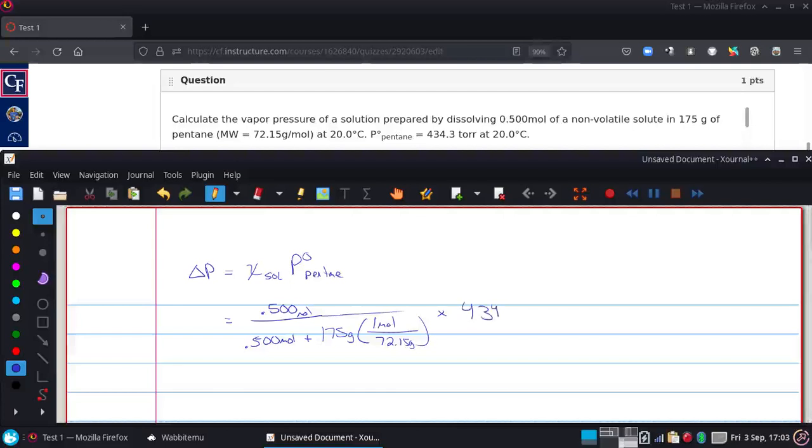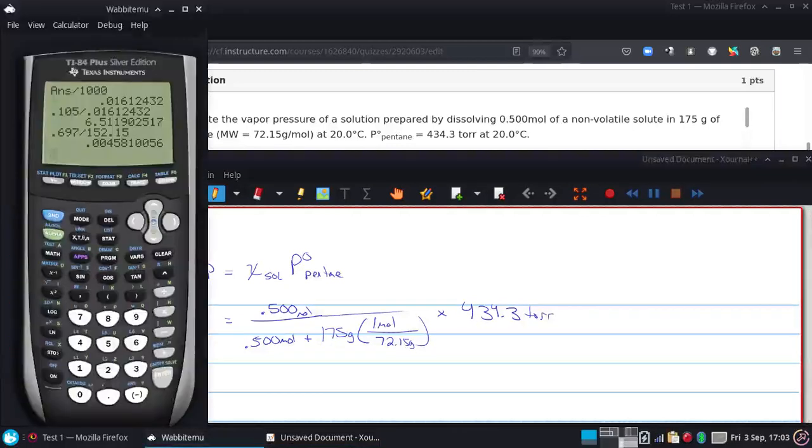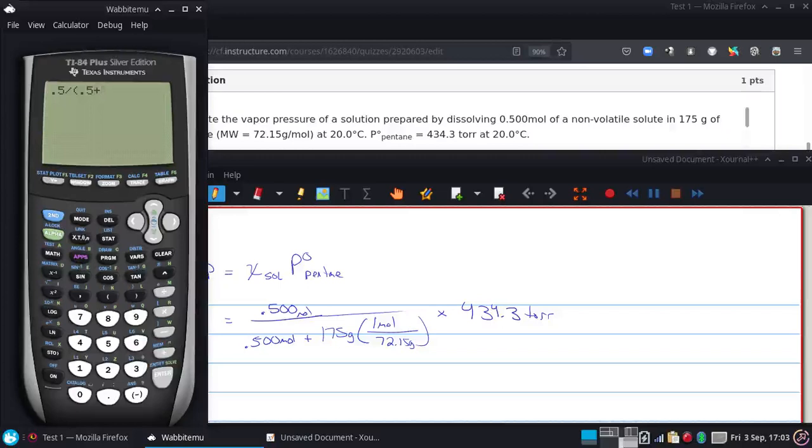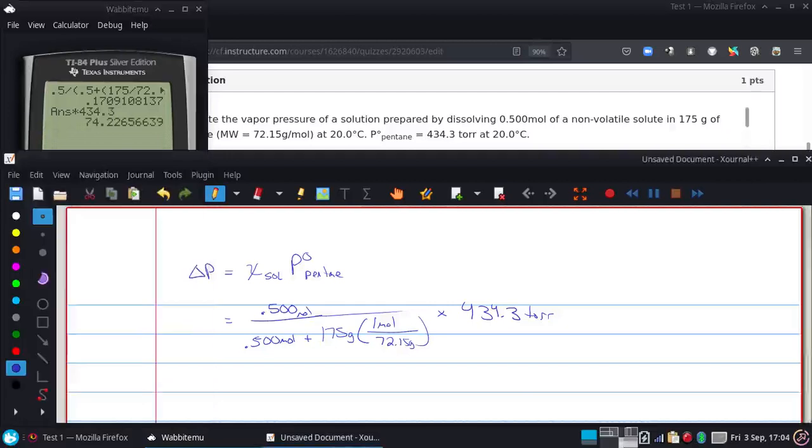So I have 0.5 divided by 0.5 plus 175 divided by 72.15 gives me this. So I'll multiply that by 434.3, and I get that this is 3 significant figures, 74.2.